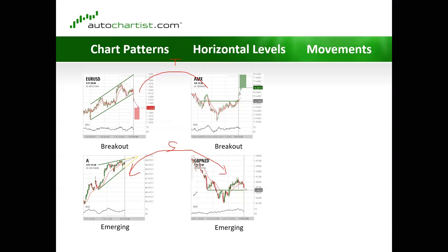Swing traders swing between overbought and oversold prices. That's really the foundation of everything that Autochartist does — it tries to identify overbought and oversold levels. At this price, the market thought that Euro was too expensive and so it went down; at this price, it thought it was too cheap and started going up. This fluctuation between overbought and oversold, too expensive and too cheap — it's all about market psychology. That's really what Autochartist tries to identify.